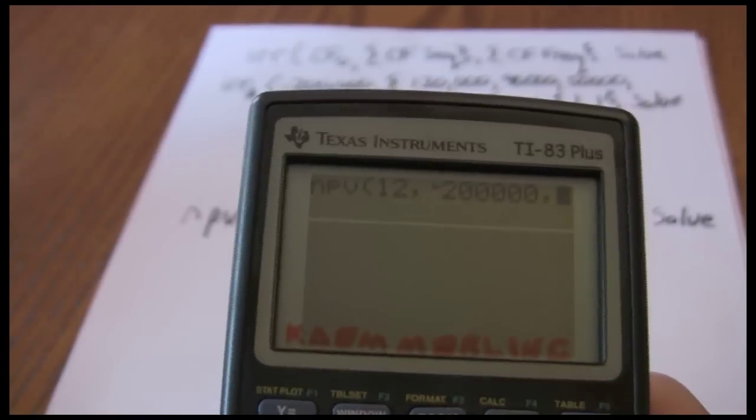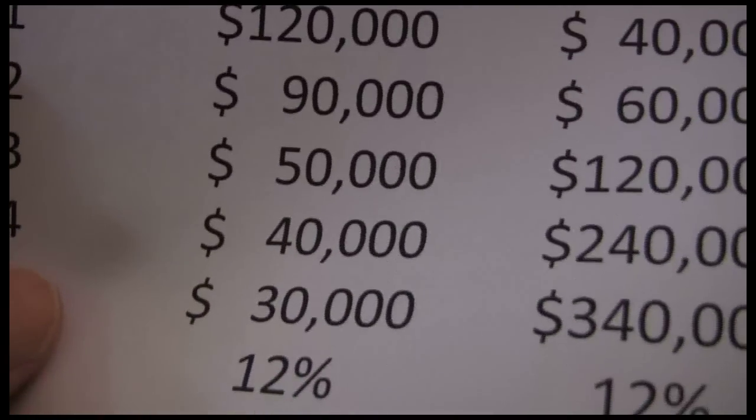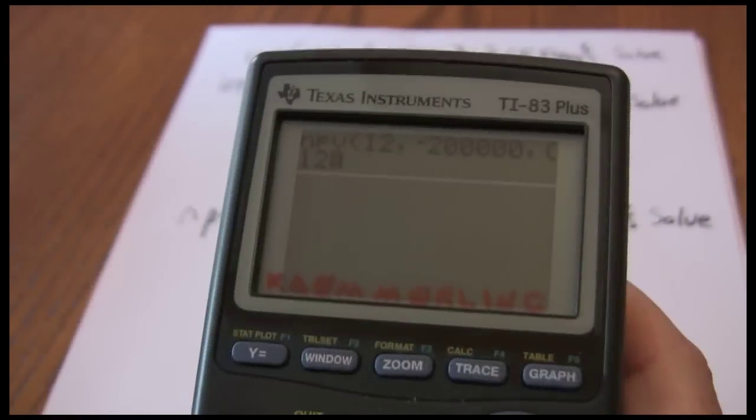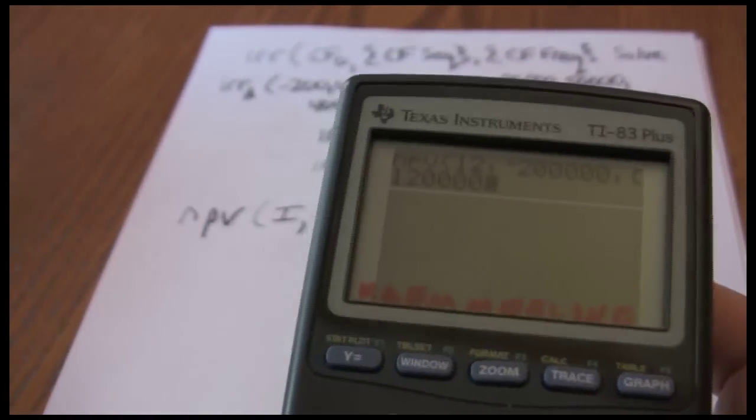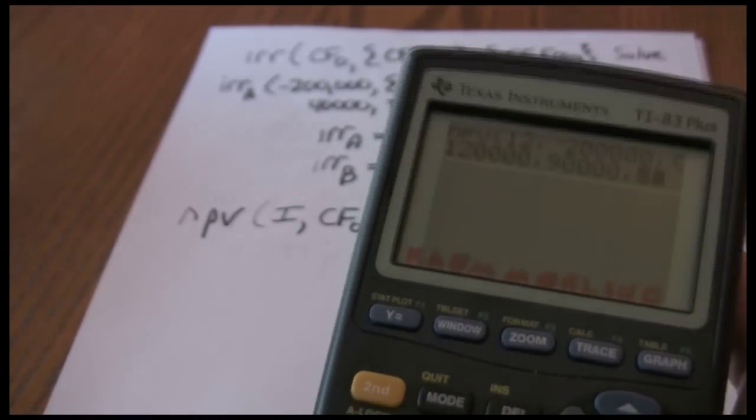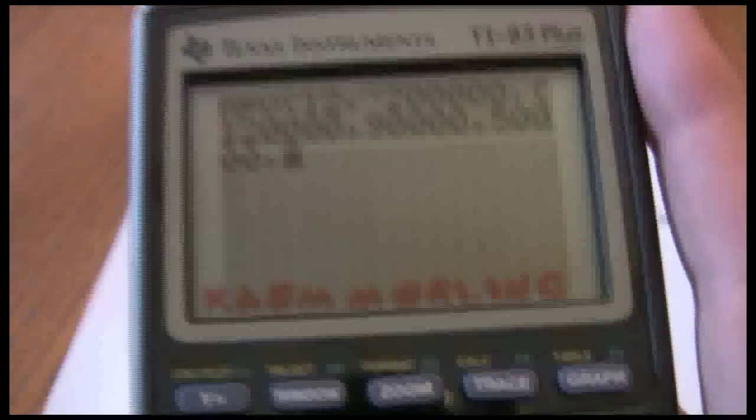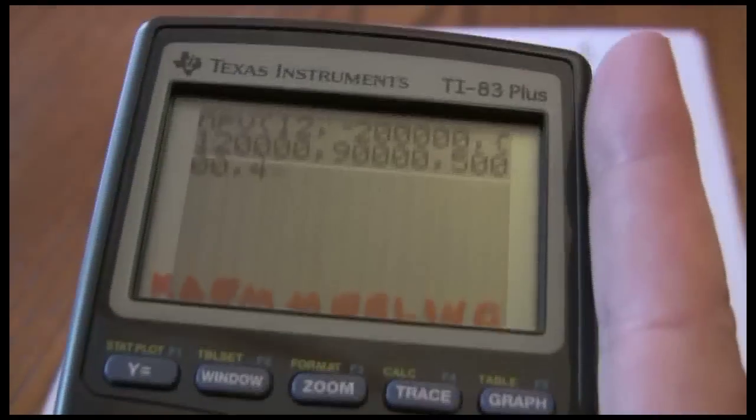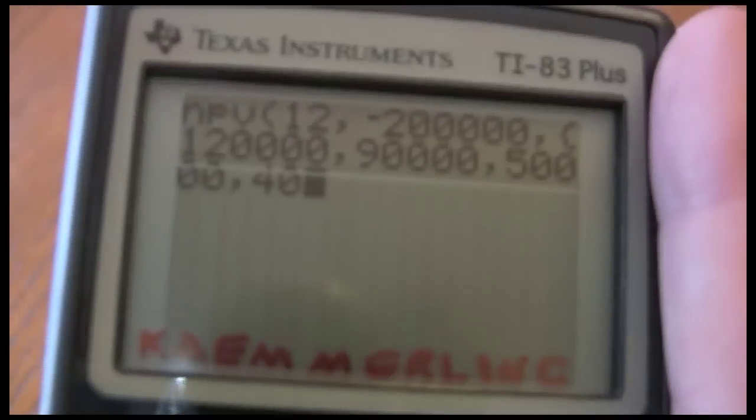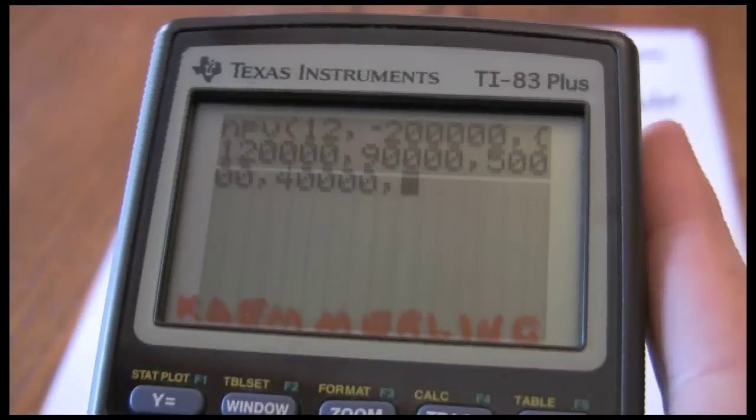Now I want my cash flow sequence: 120,000, 90,000, 50,000, 40,000, and lastly 30,000.